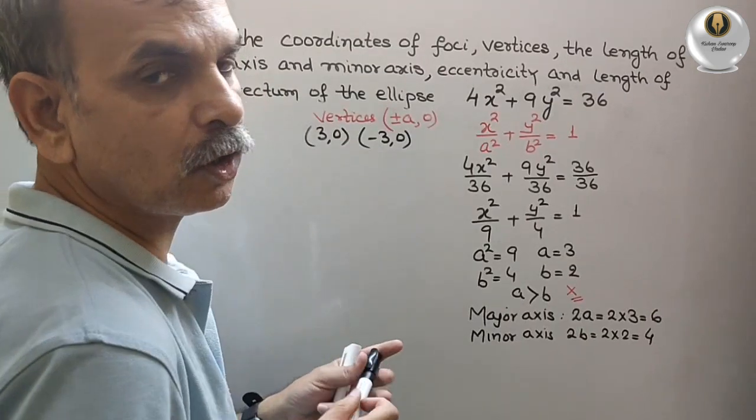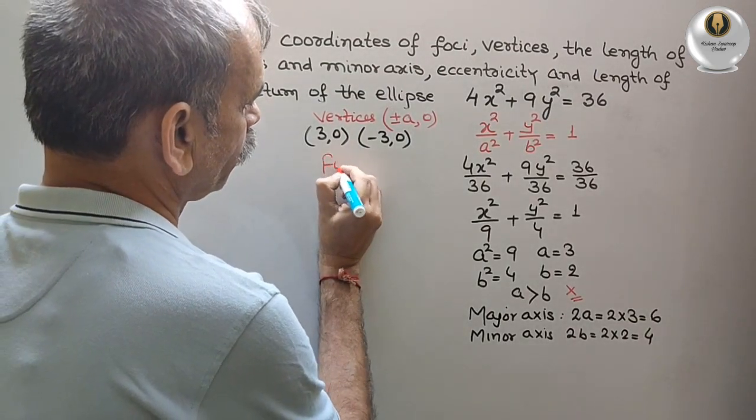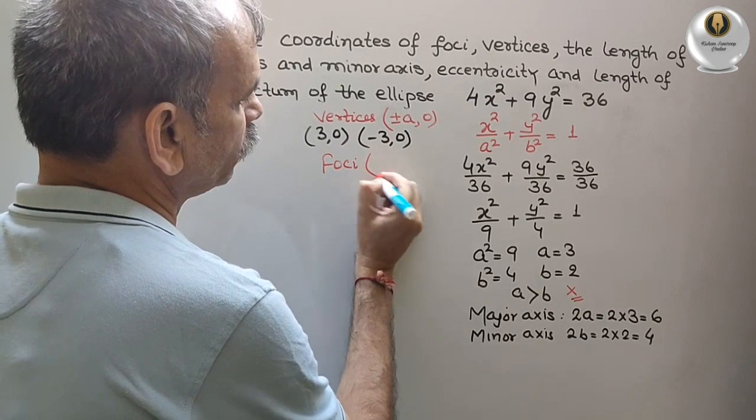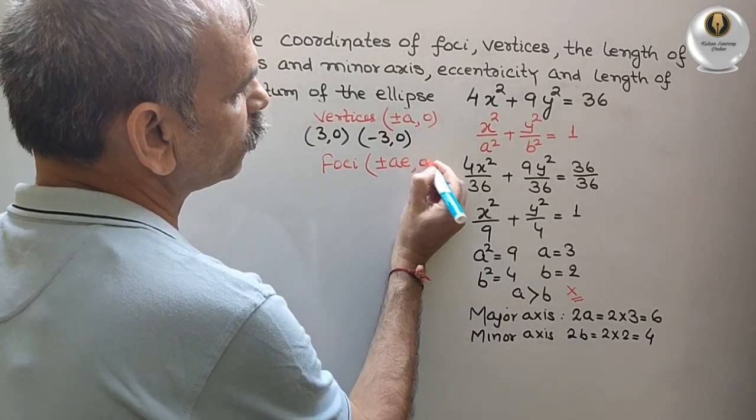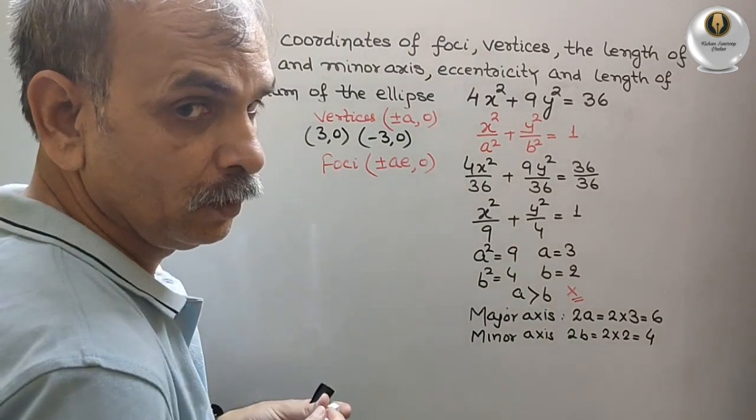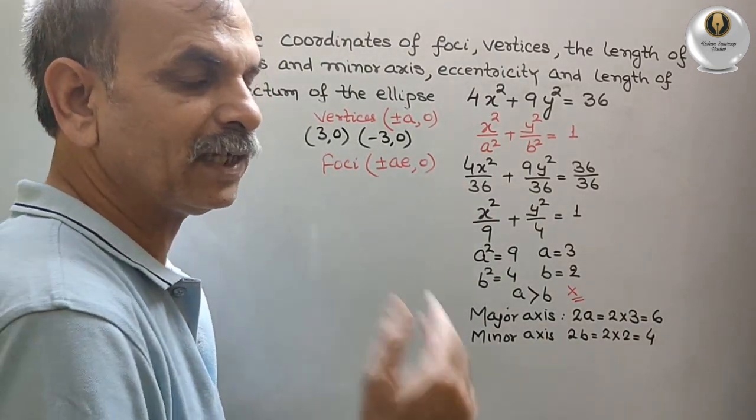Next comes your foci. That is your (±ae, 0). So here e is your eccentricity. First, we have to find out eccentricity.